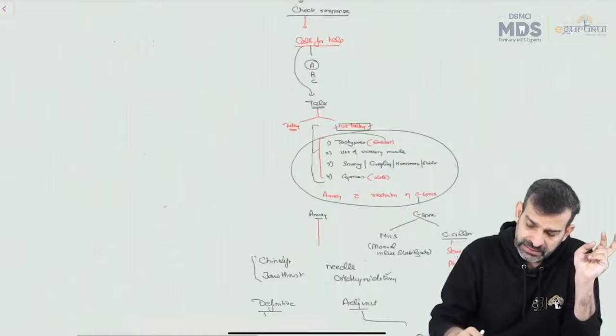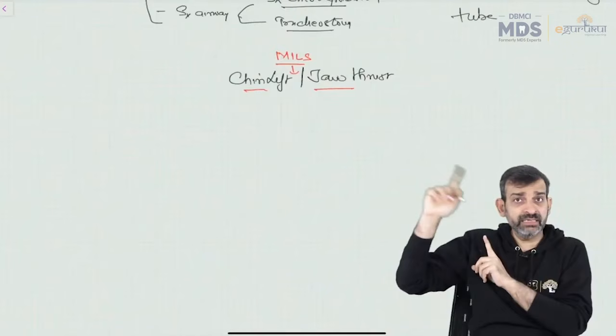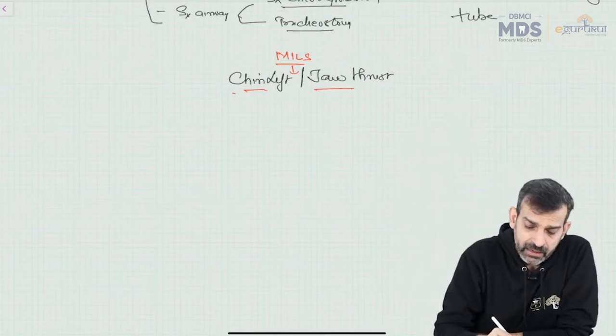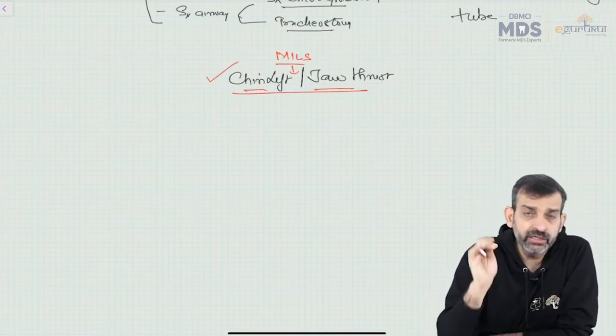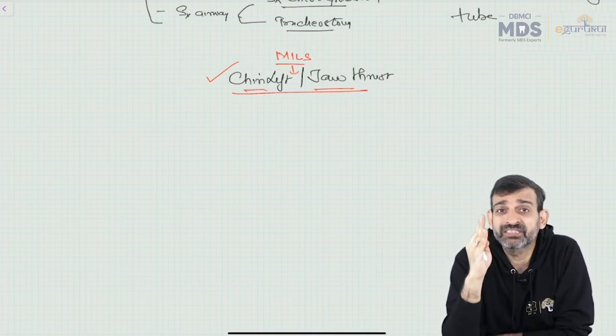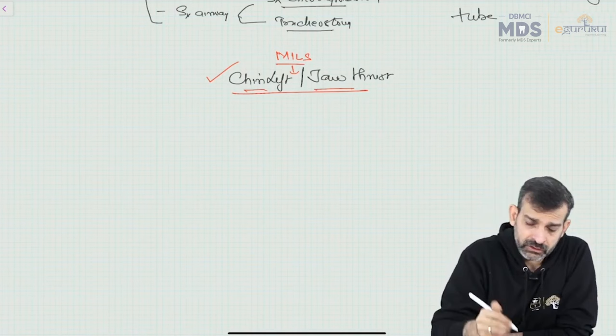You have already called for help. Till the time help arrives you continue doing chin lift or jaw thrust with MILS, because your patient has an airway problem — that is why you have stopped at A and are not proceeding to B.